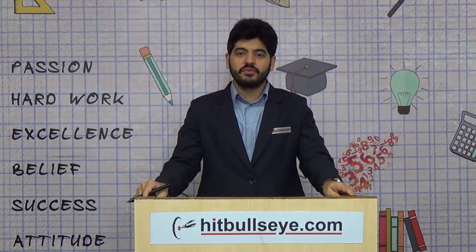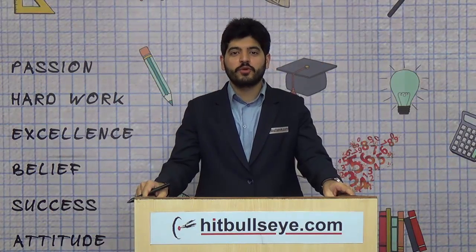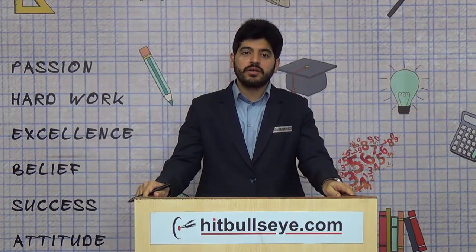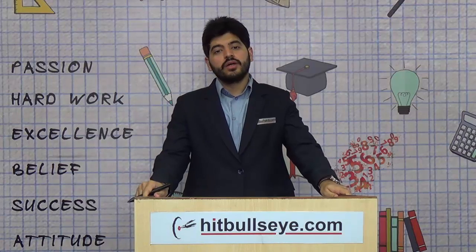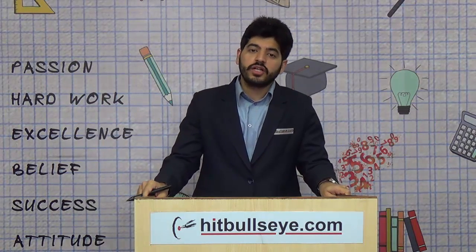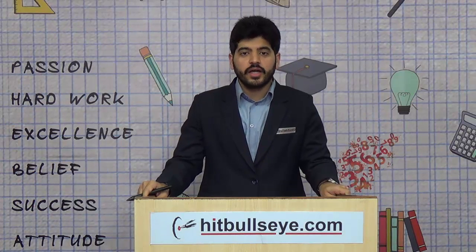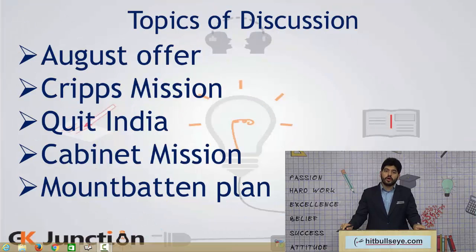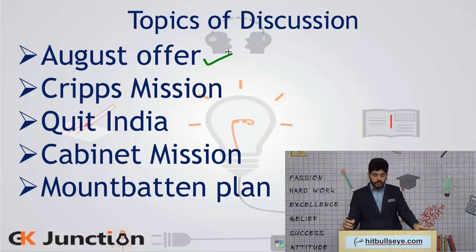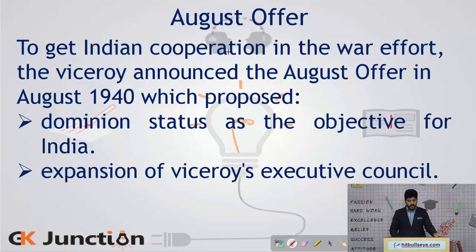Hello friends, this is Nadeep Singh from hitbullseye.com. In today's discussion we'll be discussing Indian history starting from about the 1940s till the point we gained independence. The topics of today's discussion are the August Offer, Cripps Mission, the Quit India Movement, the Cabinet Mission, and the Mountbatten Plan.